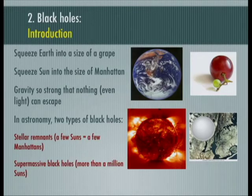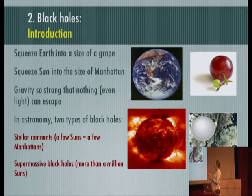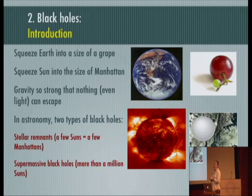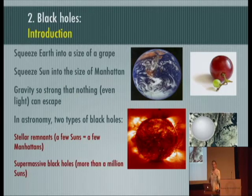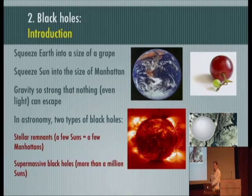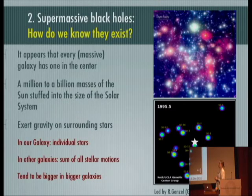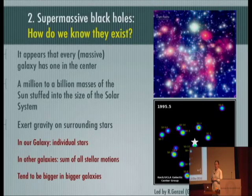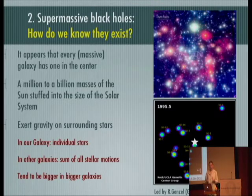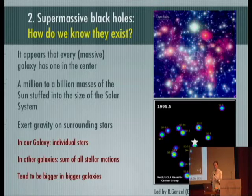A very brief introduction to black holes: if we squeeze Earth into the size of a grape, or squeeze the sun into the size of Manhattan, the gravity on the surface is so strong that nothing can escape — even light. In astronomy we have two types: stellar remnants produced in supernova explosions — a few Manhattans in size — and supermassive black holes. It appears that almost every massive galaxy has a supermassive black hole in its center, which is a fascinating fact. These weigh a million to a billion solar masses and are stuffed into the size of the solar system. We know they exist because they exert gravity on surrounding stars. In our own galaxy we can observe motions of individual stars to track the supermassive black hole's gravity.